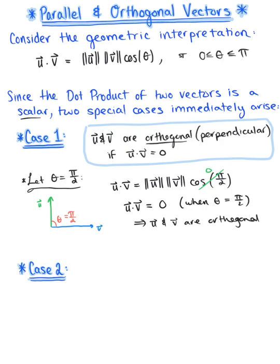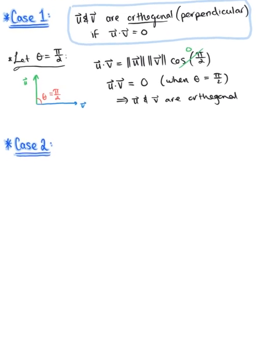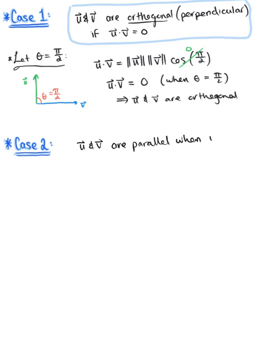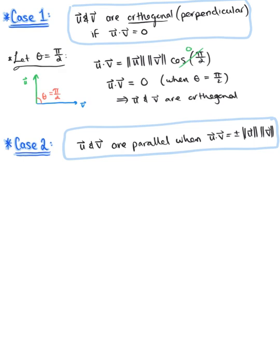Case two has two subcases. We say that vector u and vector v are parallel when vector u dot vector v is equal to plus or minus the magnitude of vector u times the magnitude of vector v. This gives us another way to determine the relationship between two vectors. Let's explore this using graphical illustrations.